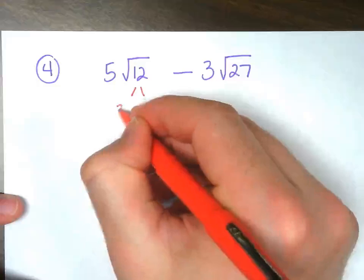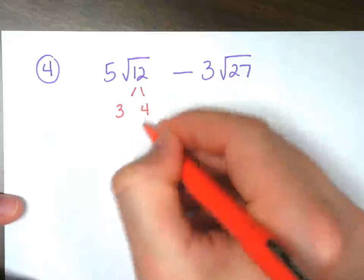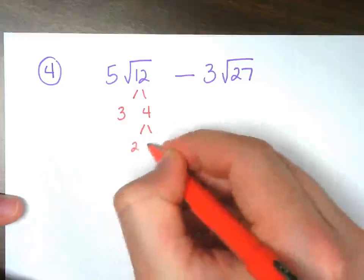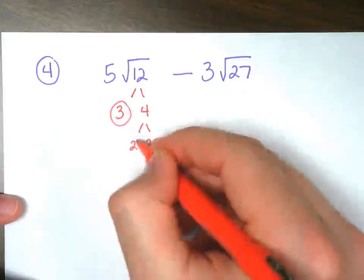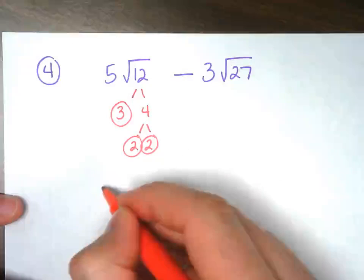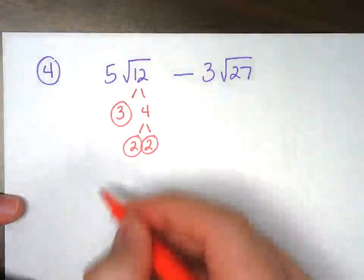So that's going to give us 3 times 4, and 4 gives us 2 times 2. 3, 2, and 2. So those are our prime numbers.